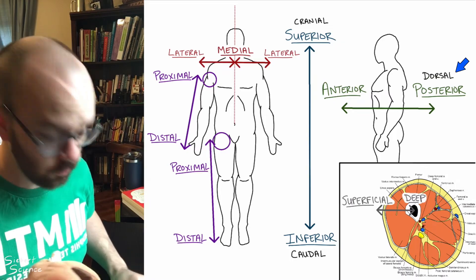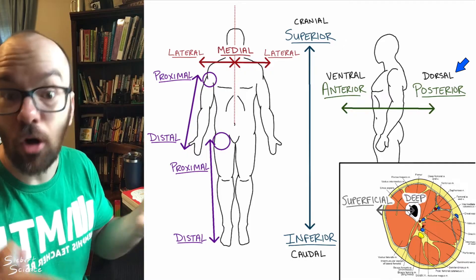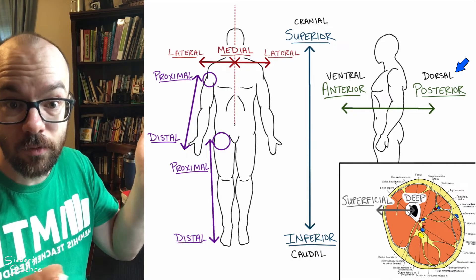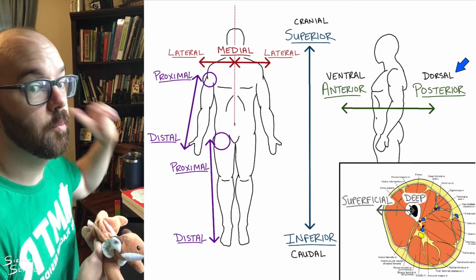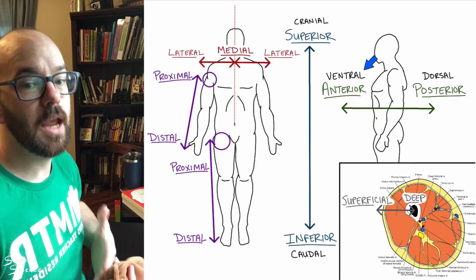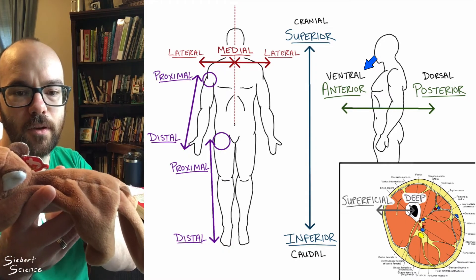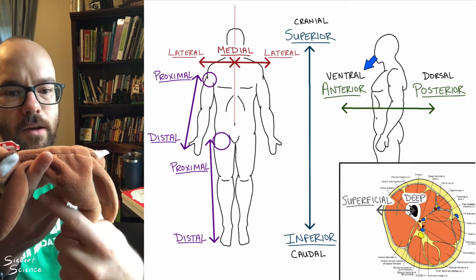Two more quick terms, which are dorsal and ventral. I first learned about dorsal whenever I was looking at sharks and stuff, and they've got a dorsal fin, which is on their back. So dorsal for us, for humans, would be the same as posterior, toward our back, anywhere the back is. And ventral would be anterior. For Sly, it would be the opposite. Dorsal would be its backside, and ventral would be its belly side down in here.